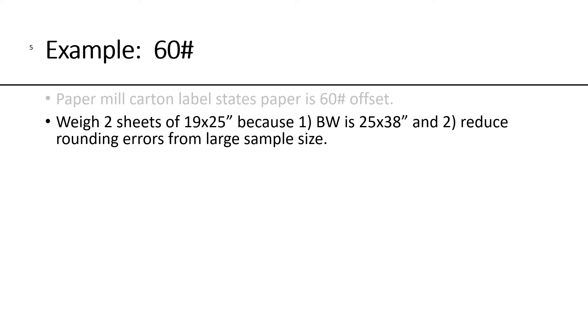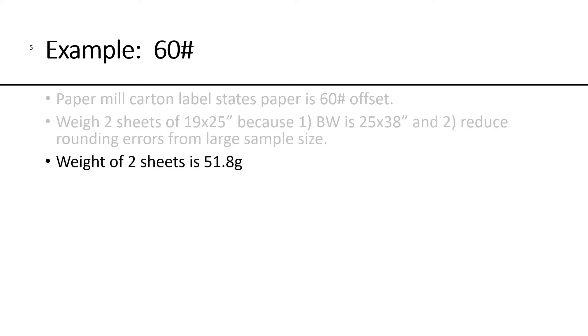When you measure two sheets, you have a larger sample size, and that reduces any errors that you might have in rounding. The weight of the two sheets is 51.8 grams. We're going to convert the grams into pounds, and we know that one pound is 453.59 grams. So, when you take 51.8 grams and divide it by 453, you get 0.1142 pounds.